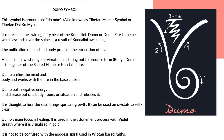It can be used on crystals to self-clear. Dumo's main focus is healing. It is used in the attunement process with violet breath, where it is visualized in gold. It is not to be confused with the goddess spiral, which is used in Wiccan-based faiths.